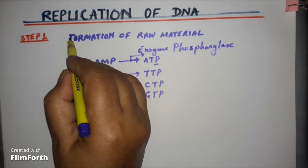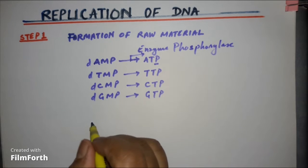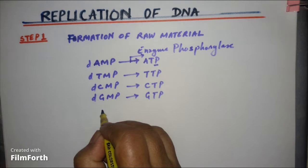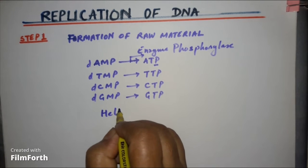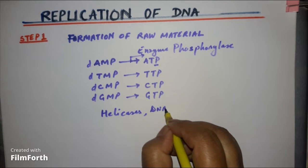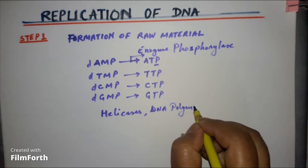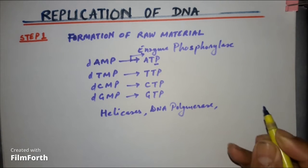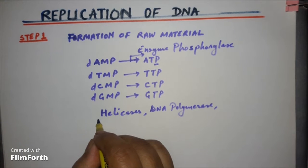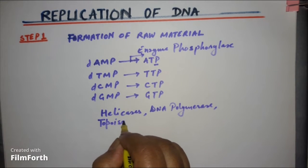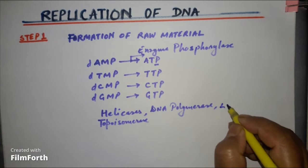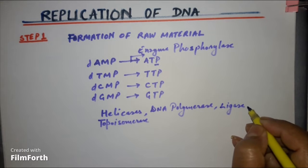Now what are the enzymes required for this process, the whole process of DNA replication? Some enzymes are helicases. Raw material I am talking about, DNA polymerase is the major enzyme which will be required for this process. Then there will be topoisomerase also which is also required for unwinding of the helix. Then there is ligase enzyme which helps in joining. So many proteins are also required. Major enzymes are these.